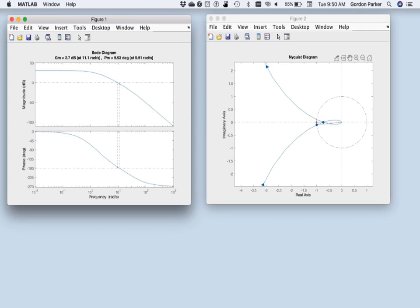Well, let's hover over this dot. So that's our gain margin, and 2.7 is exactly what we see over in the Bode plot at the phase crossover frequency of 11.1. How exciting.